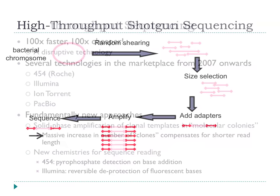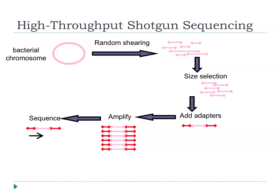When doing shotgun sequencing now, we take the chromosome, shear it up, size select, and then instead of cloning into a vector, we ligate adapters at either end of the molecule. In most current approaches, we still go through an amplification step to create enough template for sequencing. There's a lot of interest in single-molecule sequencing, but most high-throughput technologies do require an amplification step at the moment. Once you have the template, you sequence it using the adapters you've ligated on.